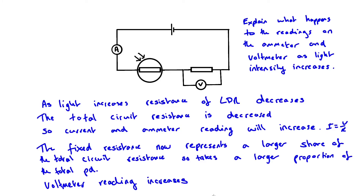With the same voltage across a smaller total resistance, a larger current is driven — since I = V/R, a smaller resistance gives a bigger current, so the ammeter reading increases. Using potential divider theory, since the LDR resistance is reduced, the fixed resistor now represents a larger share of the total circuit resistance and therefore takes a greater proportion of the total potential difference — hence the voltmeter reading across the fixed resistor increases. Alternatively: more current through the fixed resistor means more volts across it (V = IR).